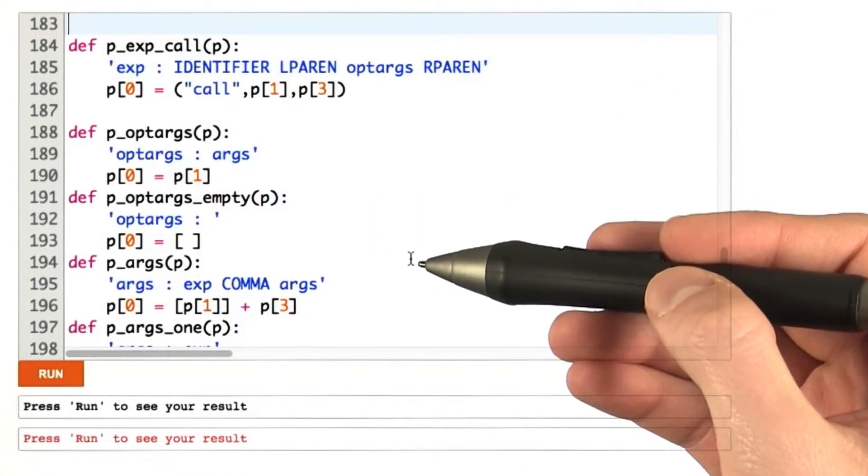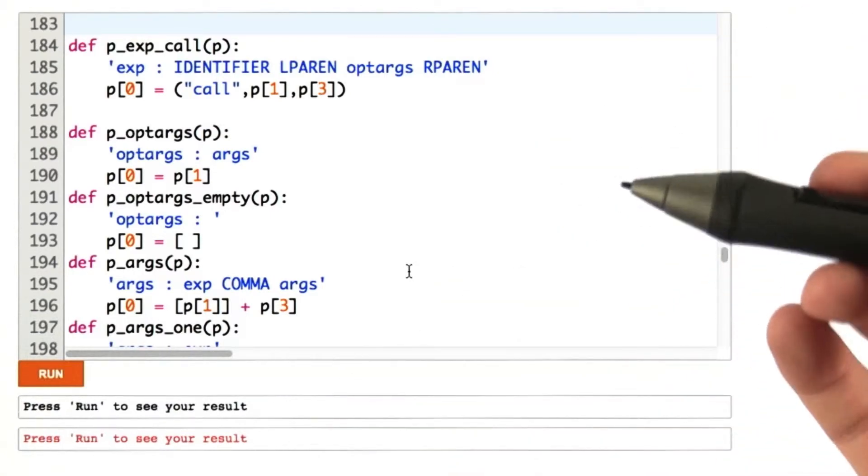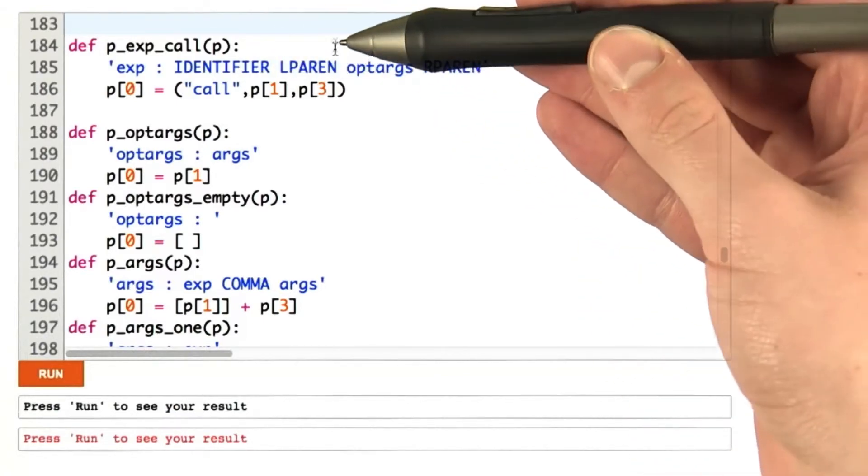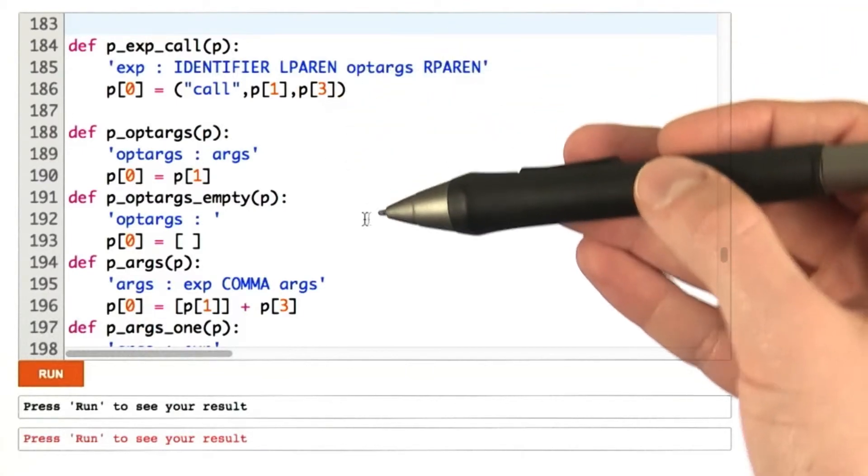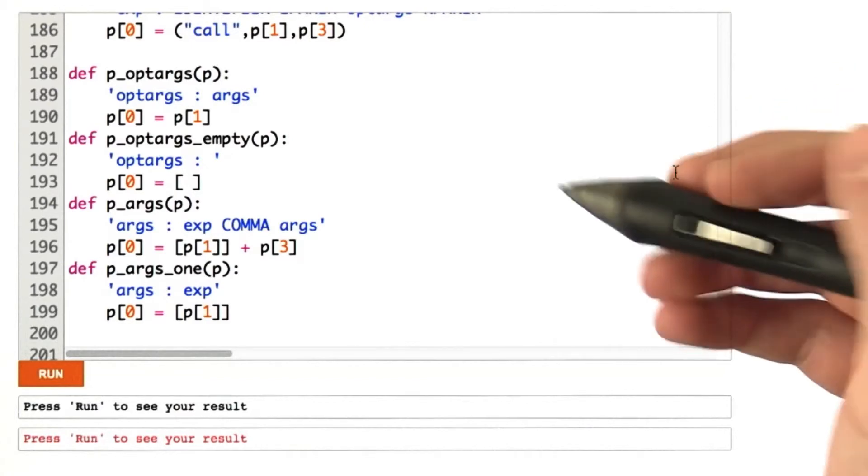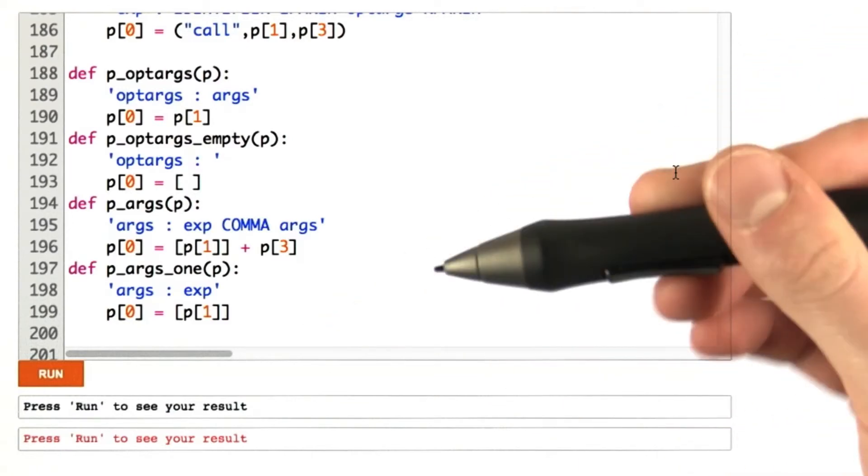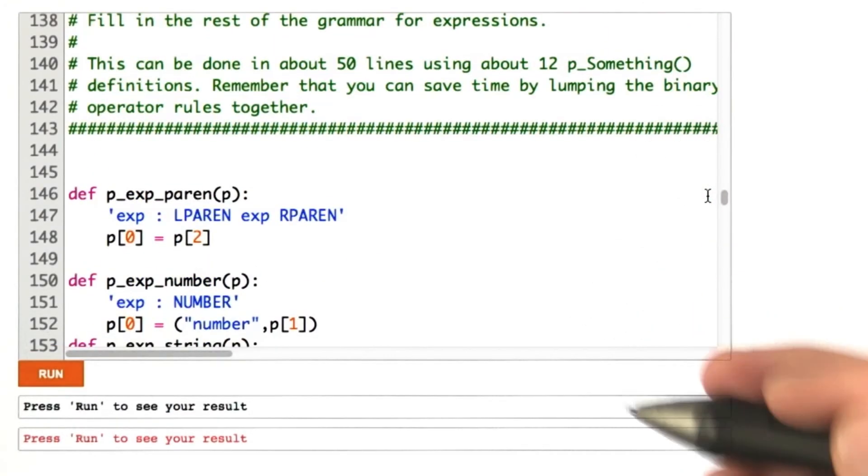And now, I have the expressions for function calls, not just declarations, which we had in the last problem. A function call is going to be an identifier with optional arguments in between parentheses. And the code for handling optional arguments is almost exactly the same as the code we use to handle optional arguments in the function declaration. In fact, I think it is exactly the same. And with all that, we've done it. It's about 50 lines of code, and we're happy.